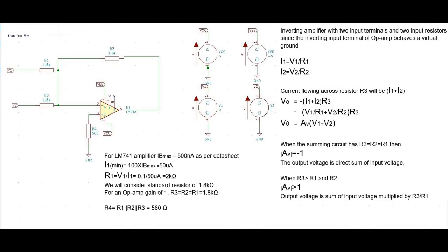From our design perspective, let us consider R2 = R1 = 1.8 kilohms. For a gain of 1, R3 = R2 = R1 = 1.8 kilohms. To calculate R4: R4 equals R1 in parallel with R2, in parallel with R3, which is equivalent to 560 ohms. Based on these design parameters, let us build the summing inverting amplifier using the KiCad tool.